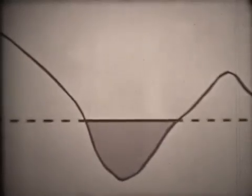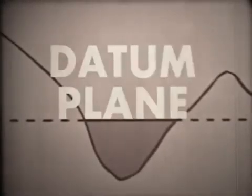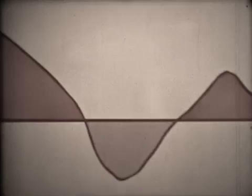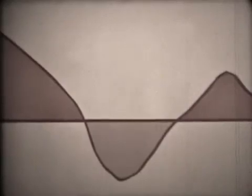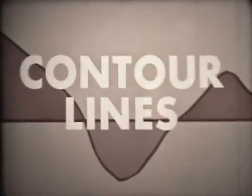A make-believe line called the datum plane separates the water below from the land above. Let's color the land brown. We are adding to our picture symbols — color symbols. And on a map, they look like this. To tell how deep the water is and how high the land is, let's add to the color symbols line symbols called contours, or contour lines.